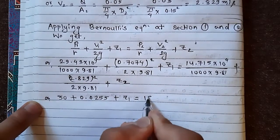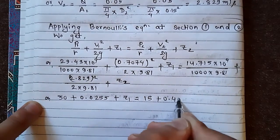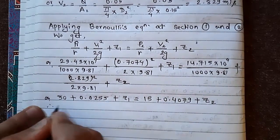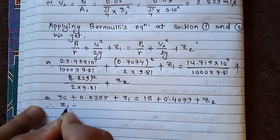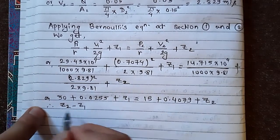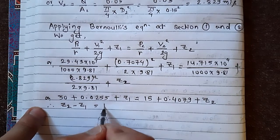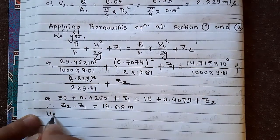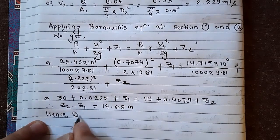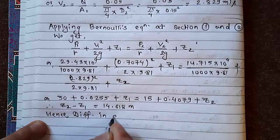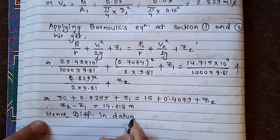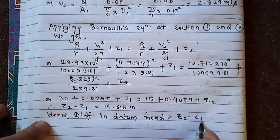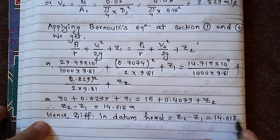Now 30 plus 0.0255 plus Z₁ is equal to 15 plus 0.4079 plus Z₂. Therefore, Z₁ minus Z₂ is equal to negative 14.618 meter. Hence, the difference in the datum head is equal to Z₂ minus Z₁ equals to 14.618 meter.